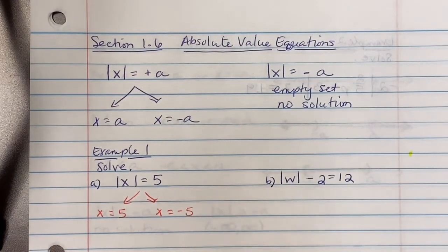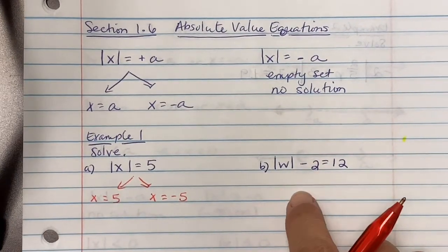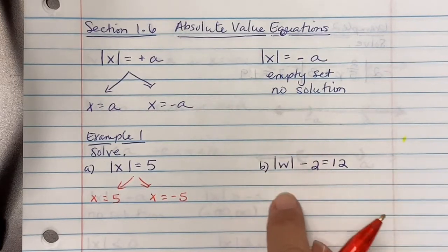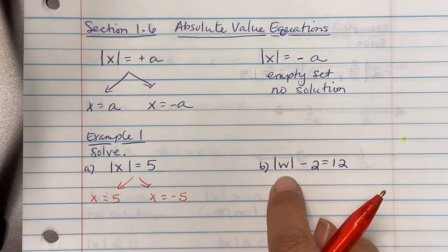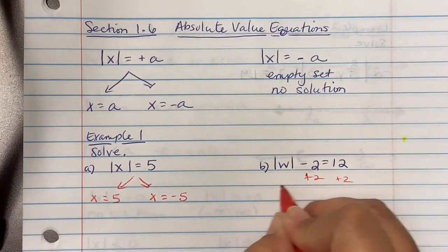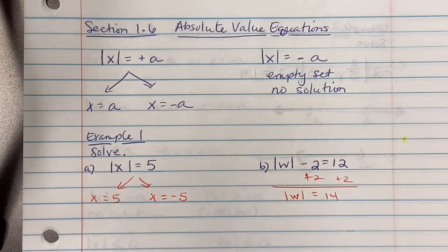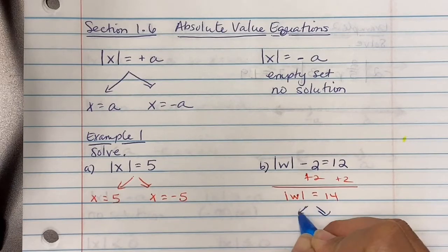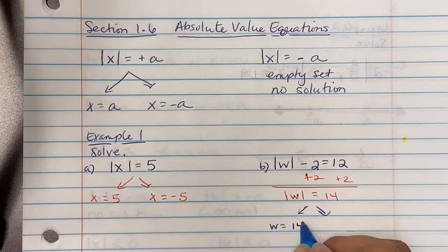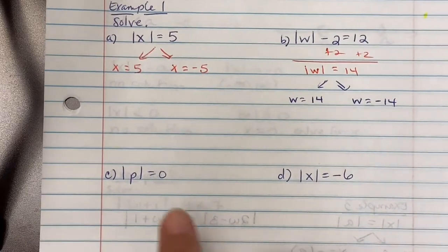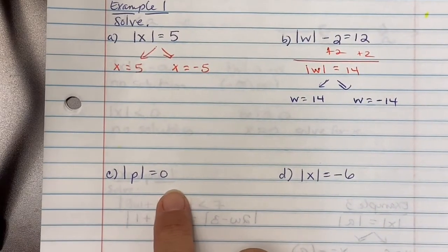Part b: absolute value of w minus 2 equals 12. First, isolate your absolute value — add 2 over, so absolute value of w equals 14. Now it's equaling a positive number, so it breaks down into two situations: w equals positive 14, and w equals negative 14.